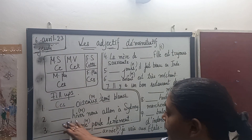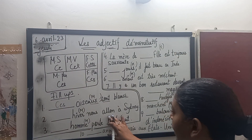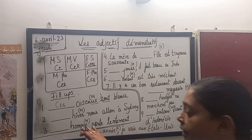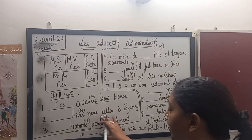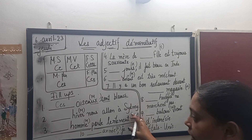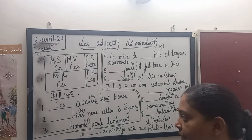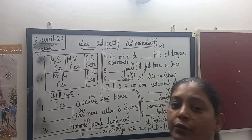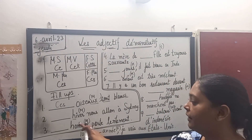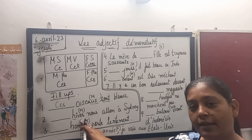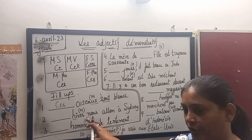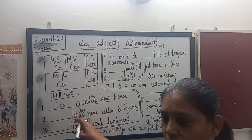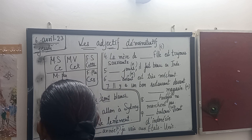The second sentence: hiver — nous allons à Sydney. Hiver means winter. We are going to Sydney this winter. Now, 'hiver' is vowel-starting. You have to memorize that 'hiver' is masculine singular and it starts with a vowel. So we will go with C-E-T.